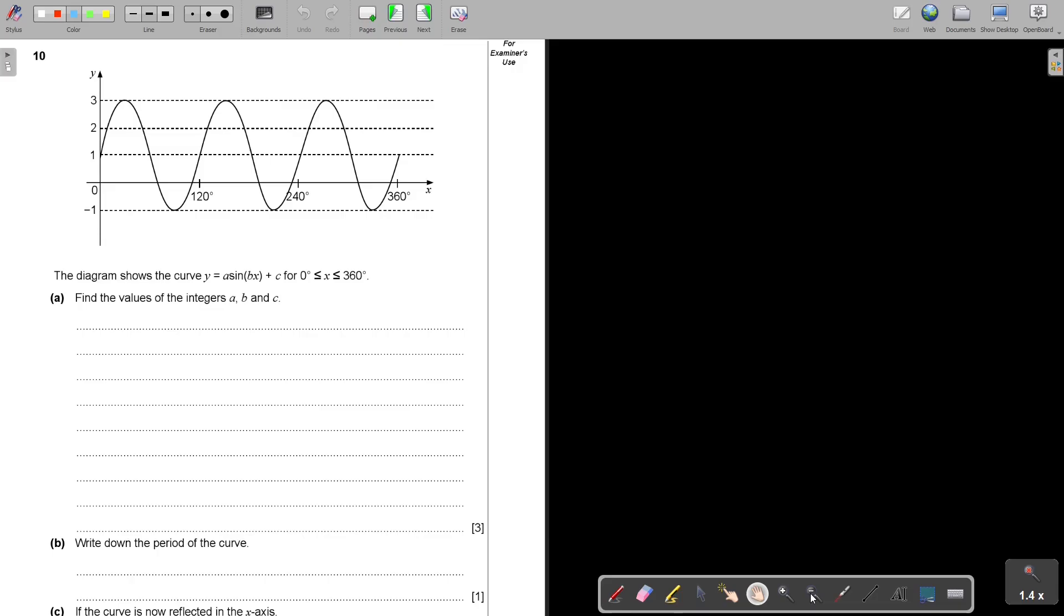We'll start. The diagram shows the curve - it's a sin graph plus C, between 0 and 360 degrees as you can see. Find the values of the integers A, B, and C. You can look on page 162 in my textbook, Try Now 16. That's a nice one. And then I will come now to another page, page 161. You can look at that table and example 11.